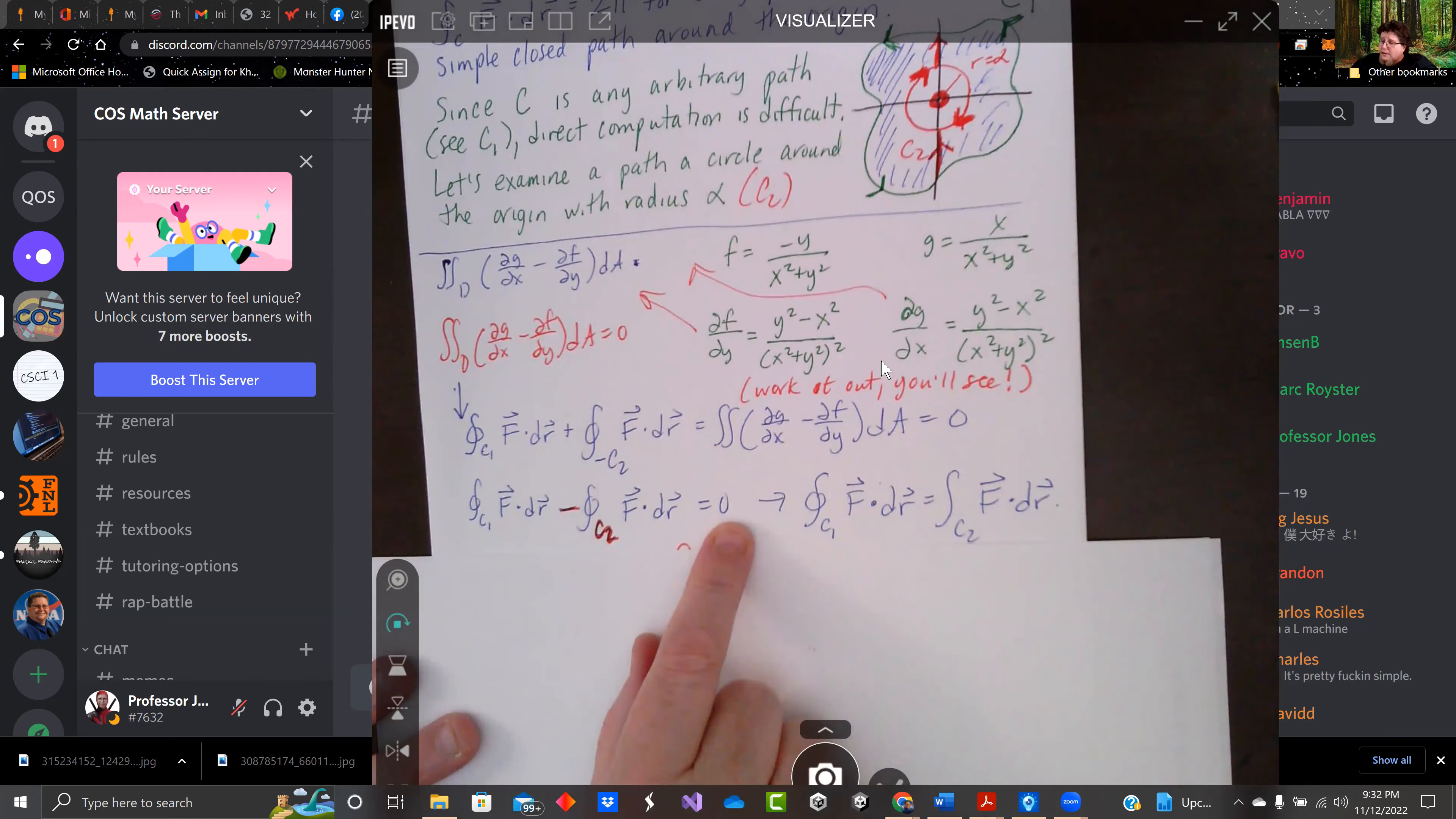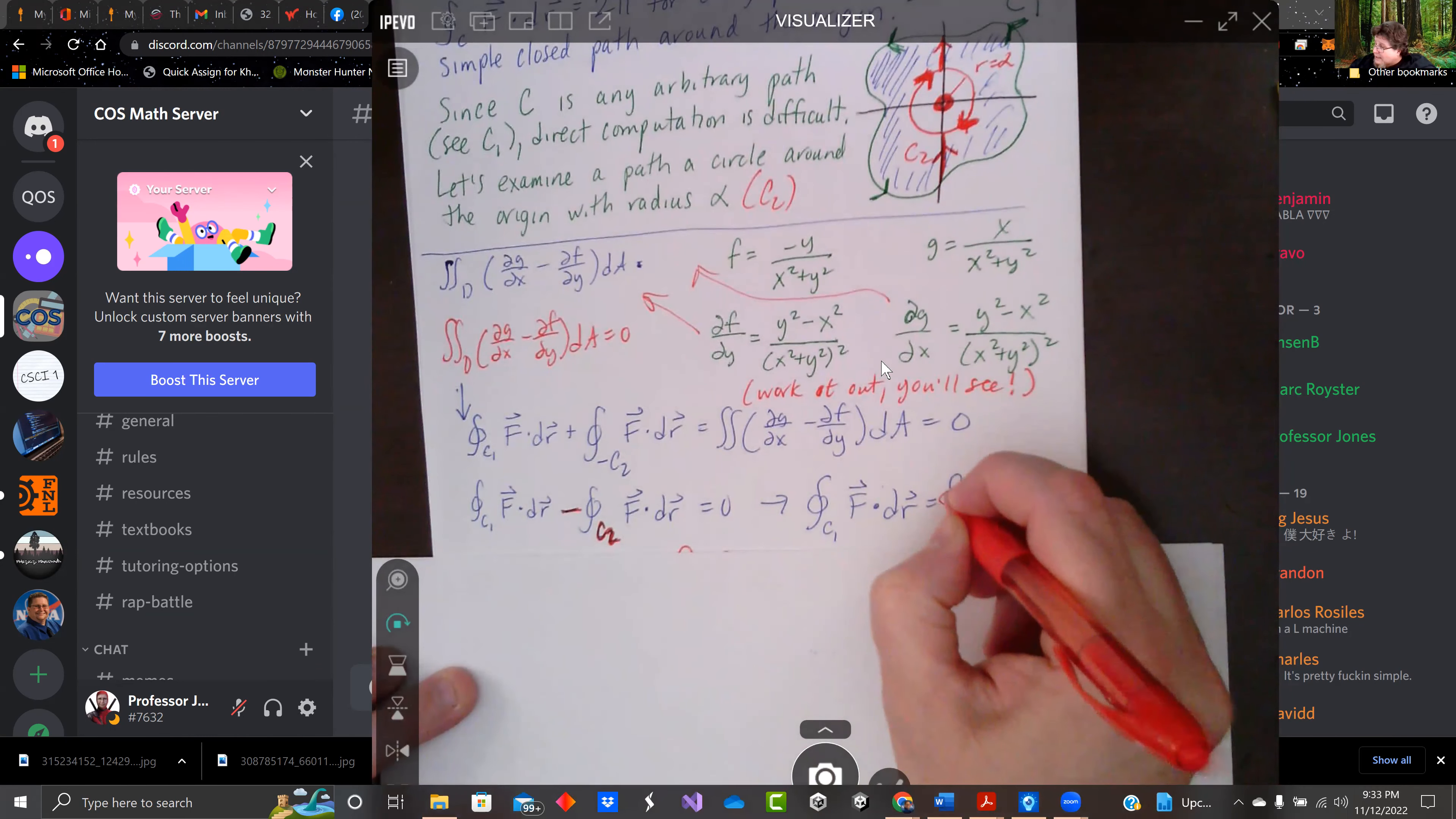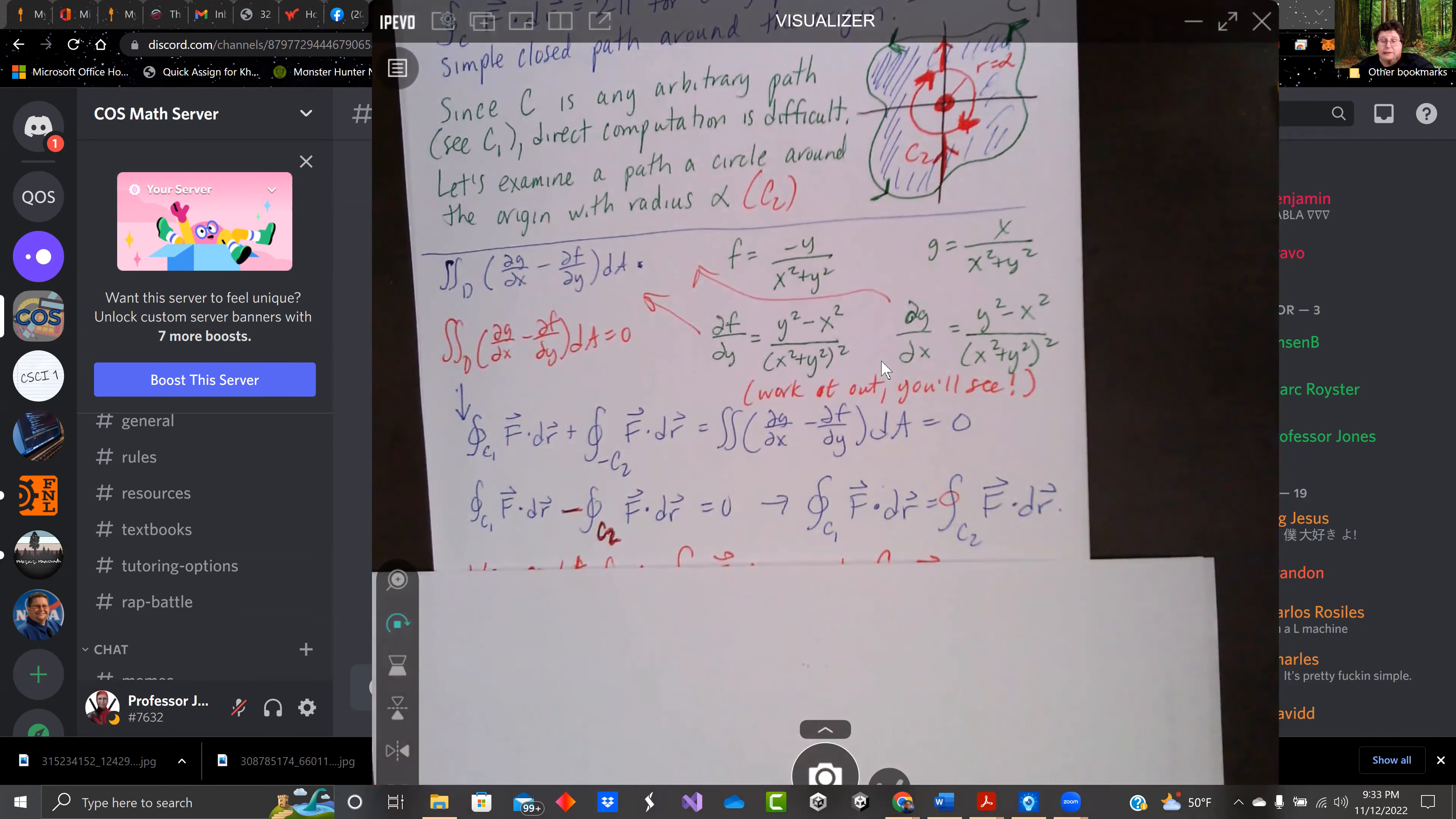And since this equals zero, the two different integrals, I can add this integral to the other side, and we're going to show that f·dr. I don't have a closed loop here shown. They both have to equal each other because the region dg/dx minus df/dy over that region equals zero. We're going to take advantage of this.